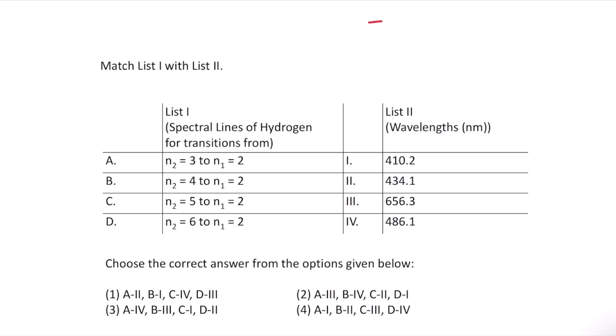We know that energy is inversely proportional to wavelength because E equals hc by lambda, and this means that the larger the energy gap, the smaller the wavelength would be.